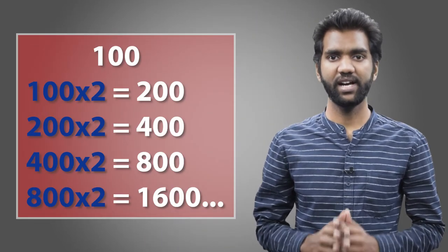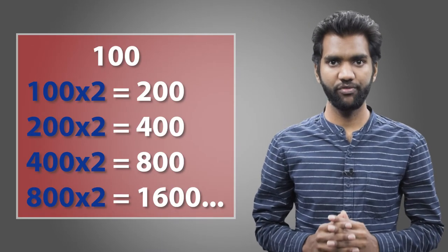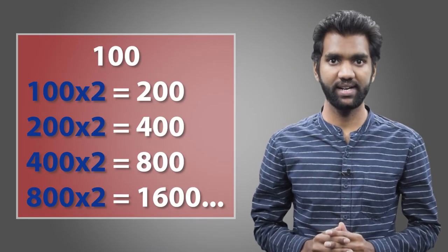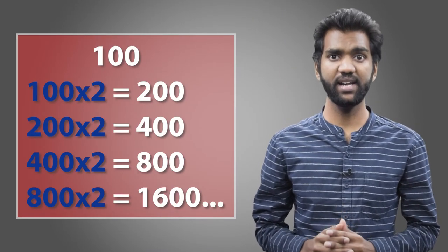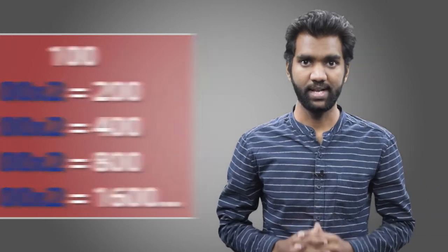ISO options change depending on your camera, but usually start at 100 and go up by the power of 2, like 100, 200, 400, 800, 1600, and so on. Even some cameras have values in between, and some newer cameras can go all the way up into the millions.